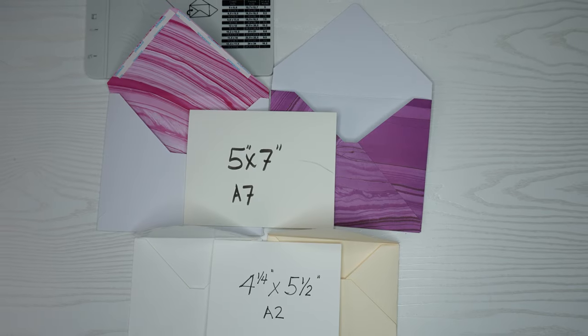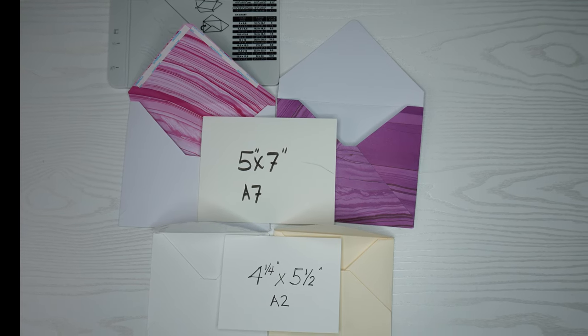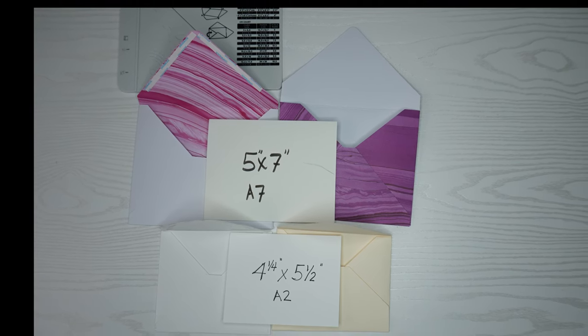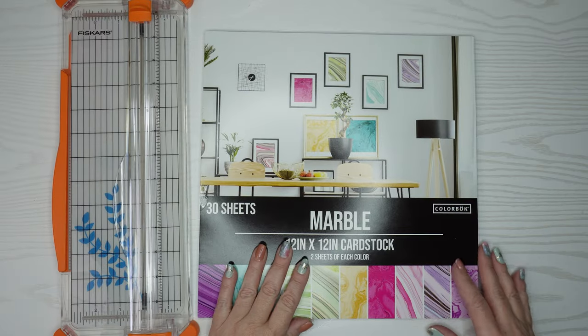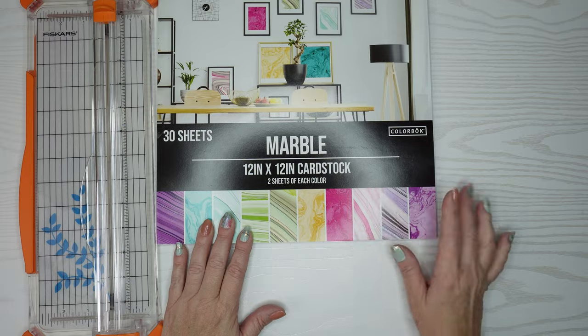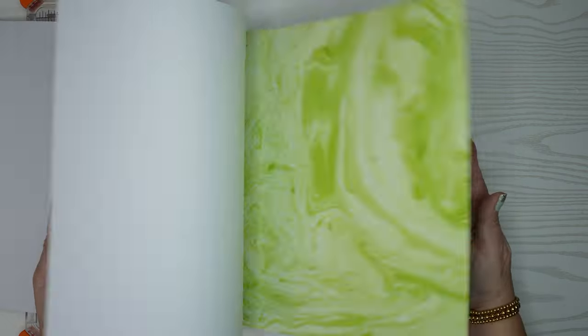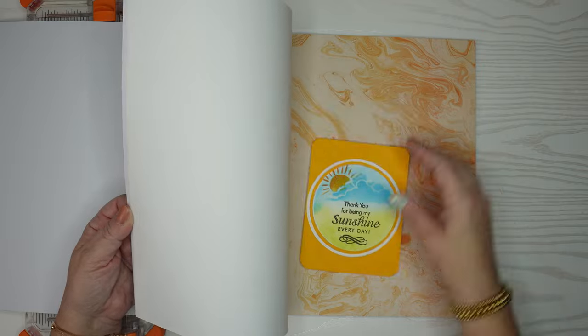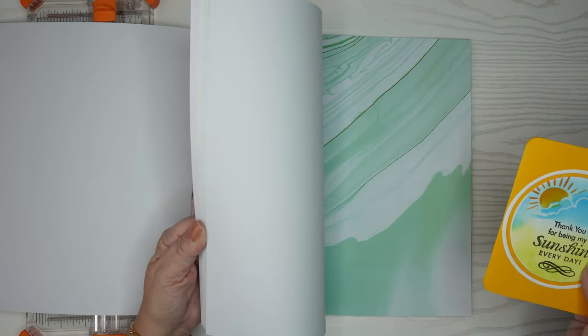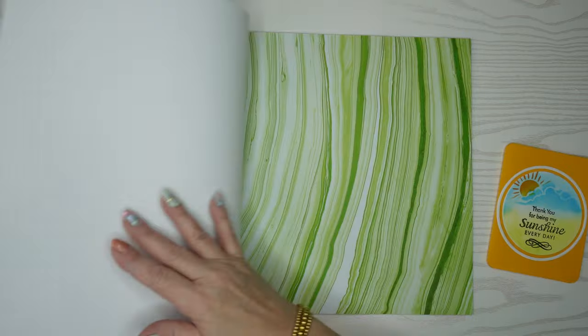Today we're going to use A7 card sizes which is 5 by 7 and then we're also going to use A2 which is 4 and a quarter by 5 and a half. First we're going to use a 12 by 12 inch cardstock pack. I get this from my grocery store Meyers in the United States. It has a bunch of really pretty colors I might not normally use for card making but they make gorgeous envelopes.